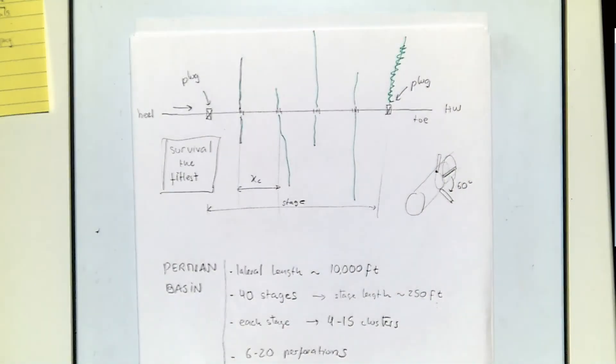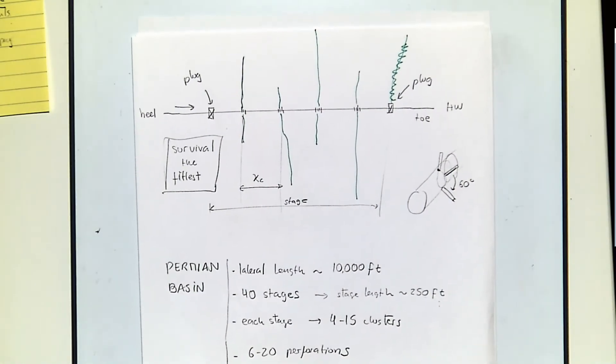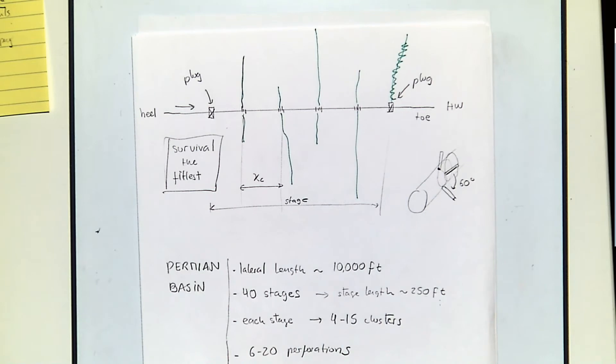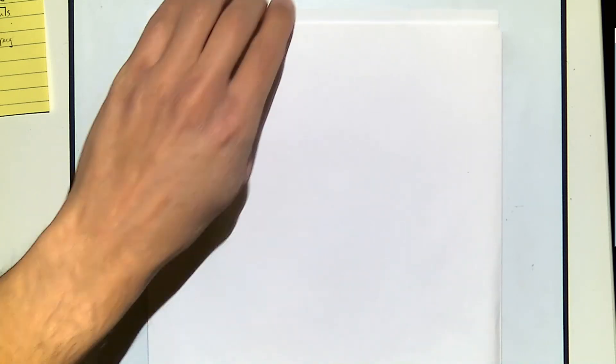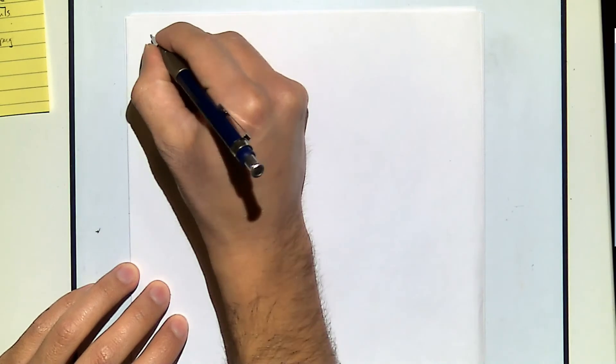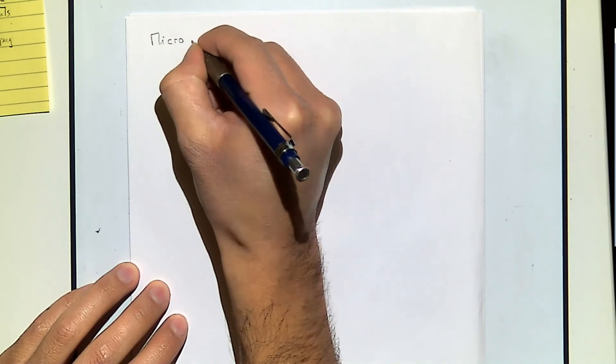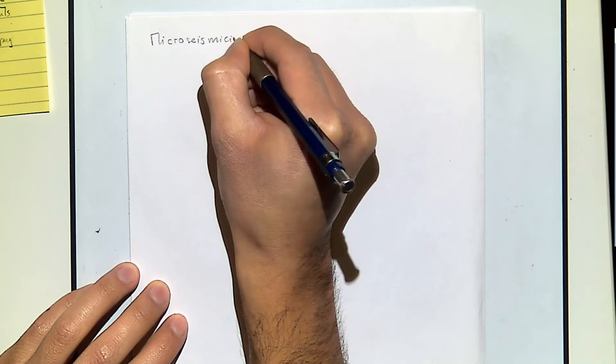But there is data from the field that suggests that some of these fractures may be a lot more complex than what we think, and there are several reasons for that. We're going to talk about those reasons now, and also the tool we have available to predict this complexity — and that's going to be through micro seismicity.